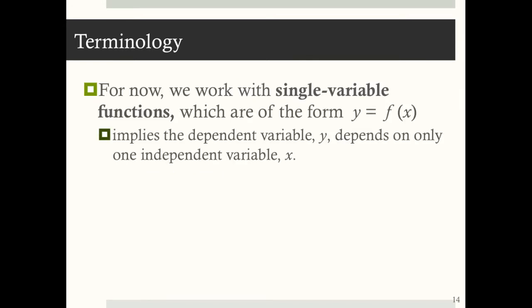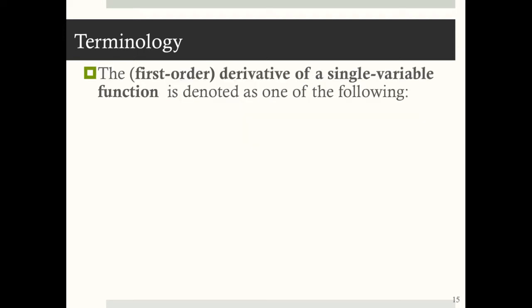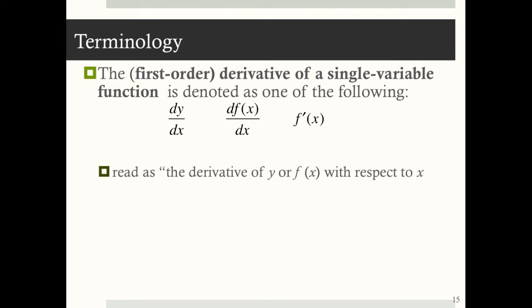For now, we work with single variable functions, which are of the form y equals f of x. This implies that the dependent variable y depends on only one independent variable x. The first order, or first derivative, of a single variable function is denoted as one of the following: dy/dx, df(x)/dx, or f prime of x. Each of these is read as the derivative of y or f of x with respect to x.